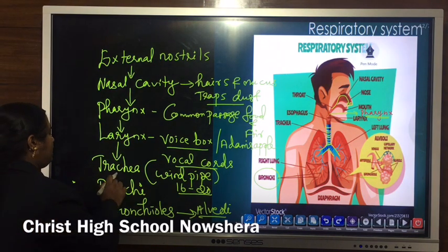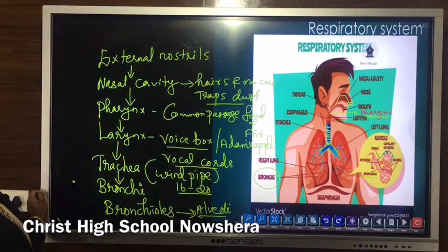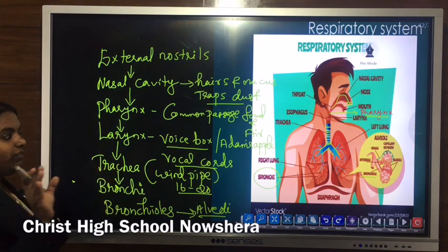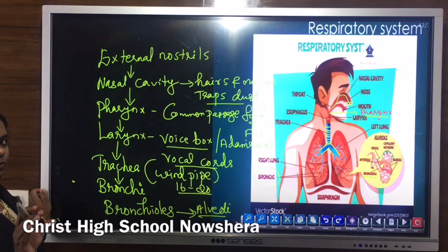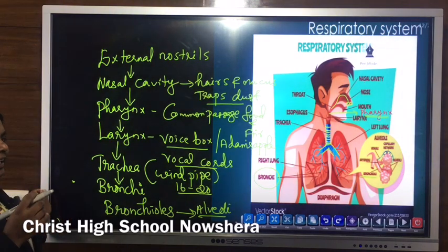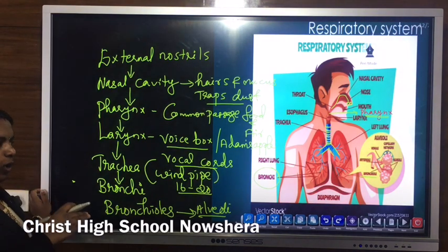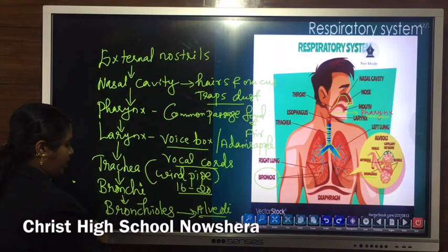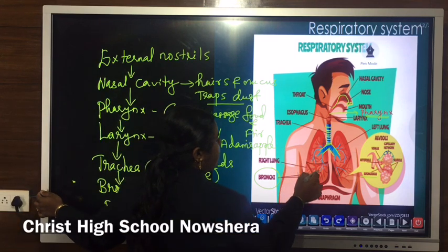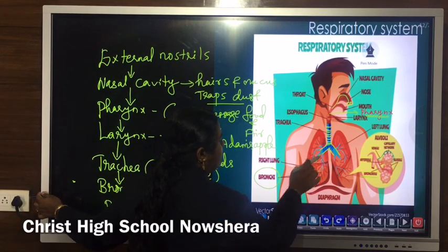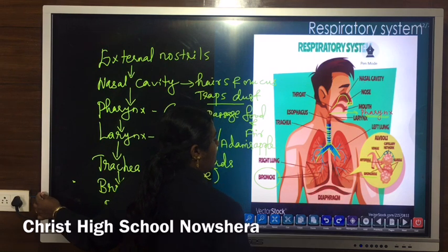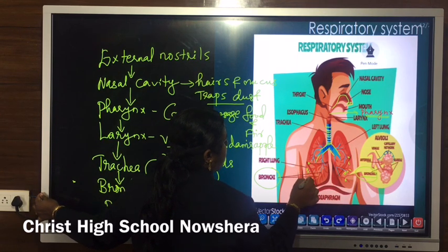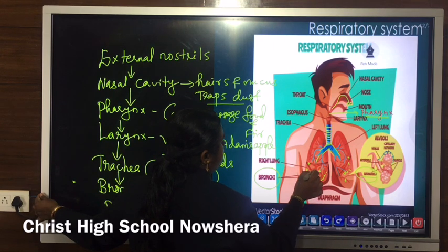The trachea leads to bronchi — the dividing branches of the trachea. Trachea divides into right bronchi and left bronchi. The finer branching of bronchi is known as bronchioles. When it enters the lungs, it divides into more finer branches — bronchioles — and at the tip of these bronchioles are small air sac-like structures known as alveoli.